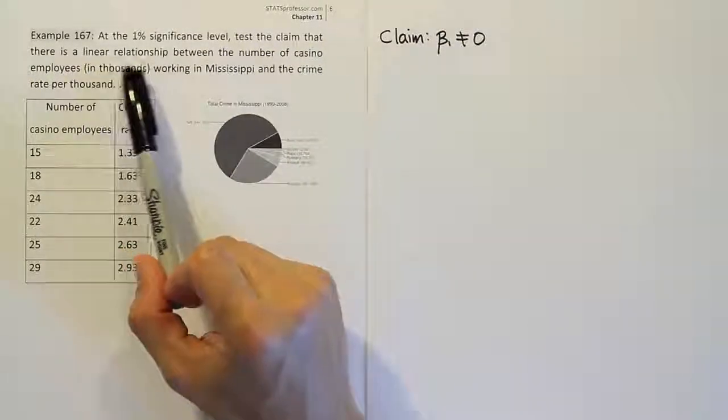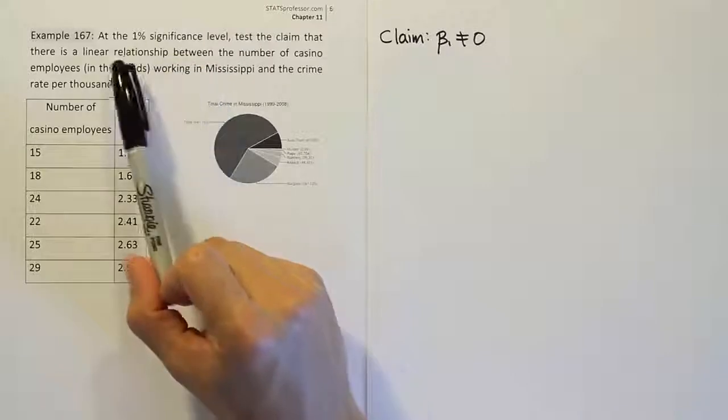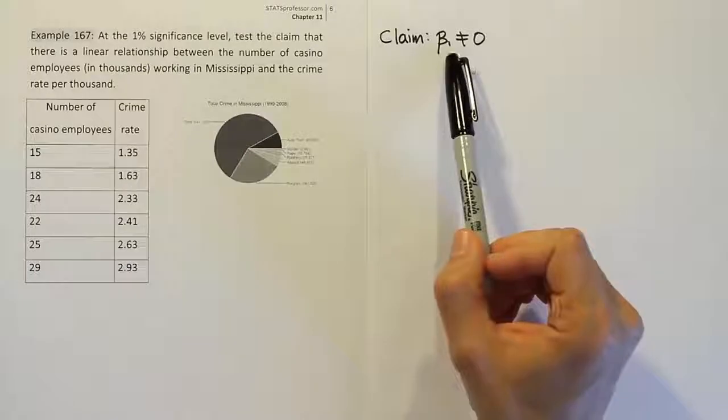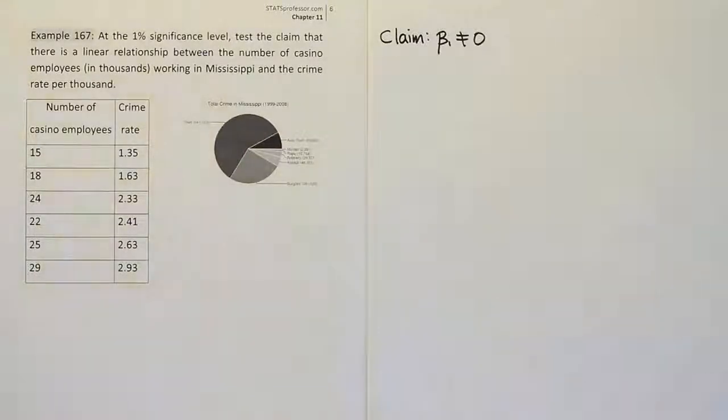So we must use not equal to. All it says is there is a linear relationship. So saying there's a linear relationship simply says that the slope is not equal to zero.